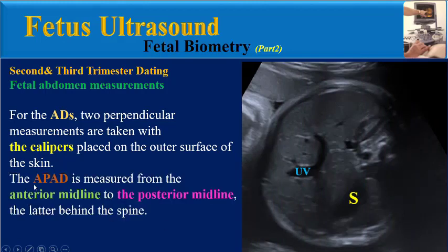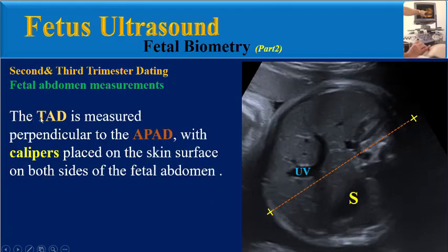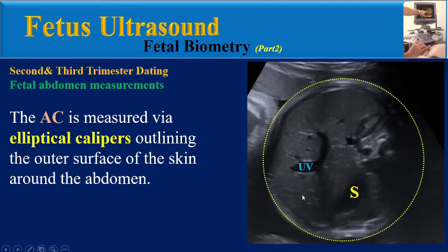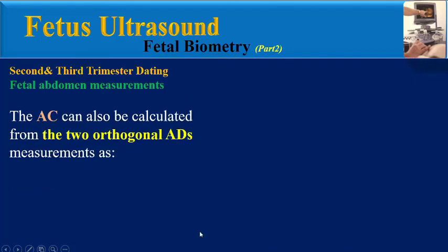For the abdominal diameters, two perpendicular measurements are taken with calipers placed on the outer surface of the skin. The anterior-posterior abdominal diameter is measured from the anterior midline to the posterior midline, located behind the spine. The transverse abdominal diameter is measured perpendicular to the AP diameter, with calipers placed on the skin surface on both sides of the fetal abdomen.